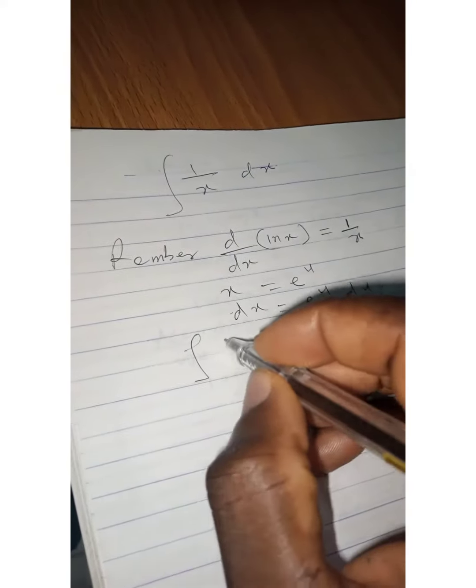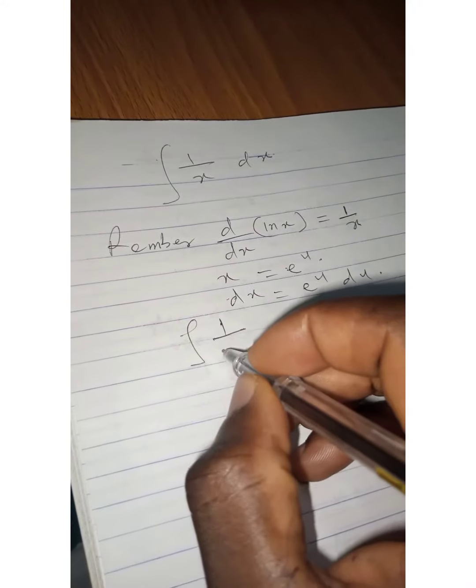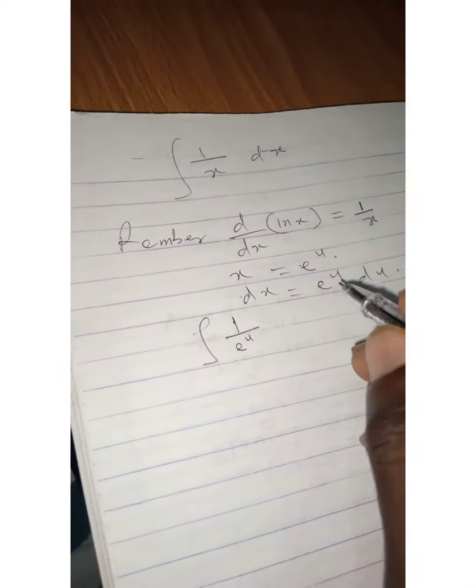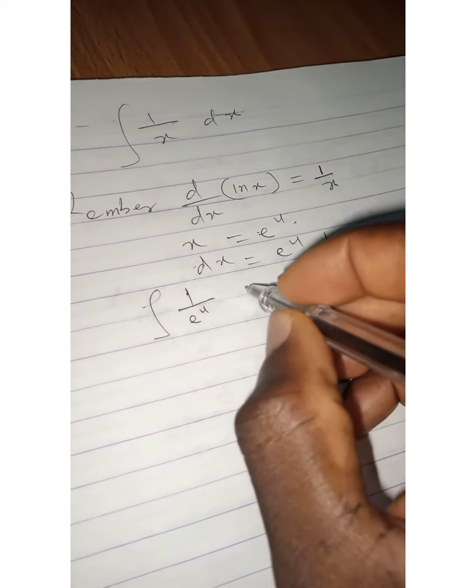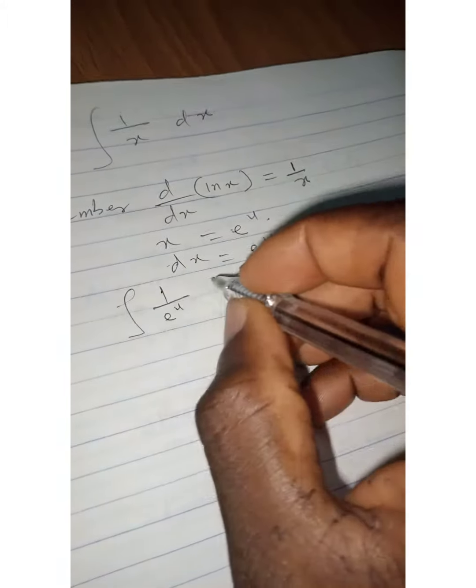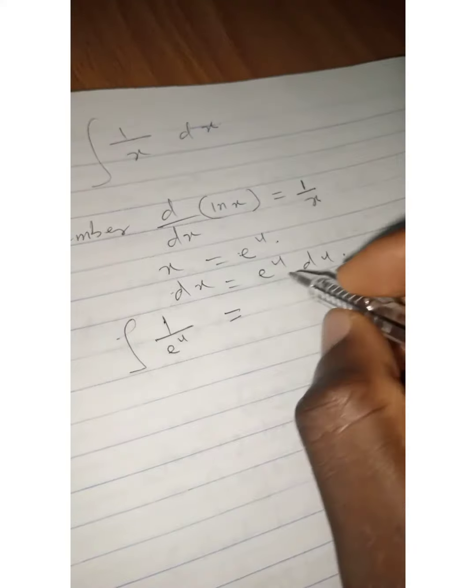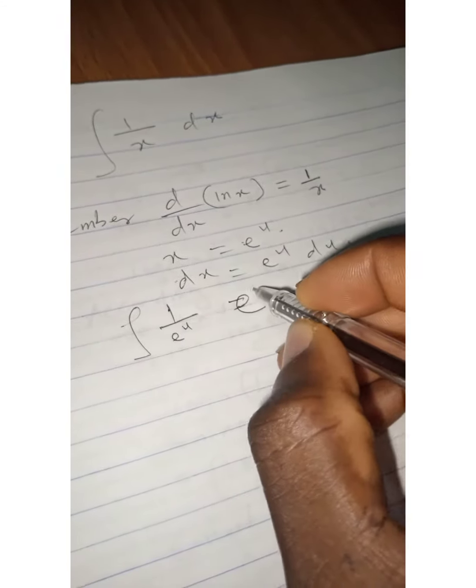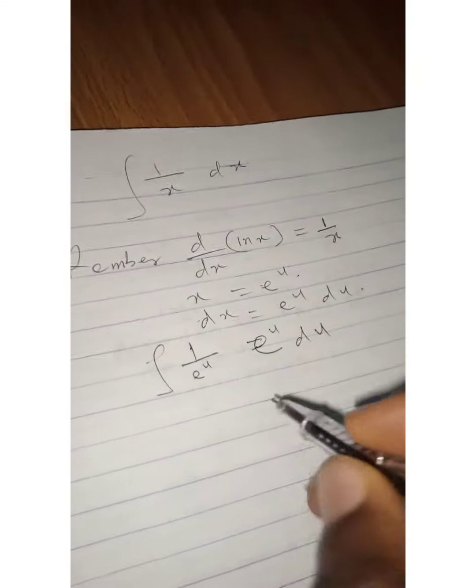We have the integral of 1 over x, which is e^u, so we get the integral of 1 over e^u times e^u du, which equals the integral of 1 du.